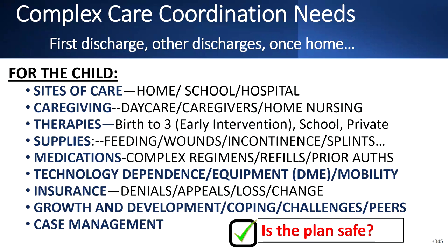The birth-to-three program comes to the home, writes up a therapy plan, and hands it to the caregivers, saying do this twice a day, three times a day — so really the therapies fall to the families. If you're over three, it goes to the school districts. There's also the option of private therapy if you have commercial insurance.